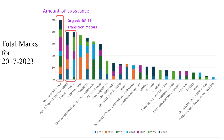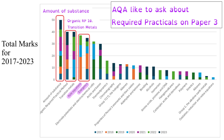Not too far behind in joint second place is required practical 10 — the preparation of the organic liquid and the organic solid — and then transition metals. The organic required practical has come up four times and is worth a lot of marks each time, whereas transition metals comes up slightly more frequently but is sometimes worth fewer marks. In fourth and fifth come rate equations and energetics. There are required practicals in all of the top seven topics, so clearly revising required practicals is important because paper three is a more practical-heavy paper.